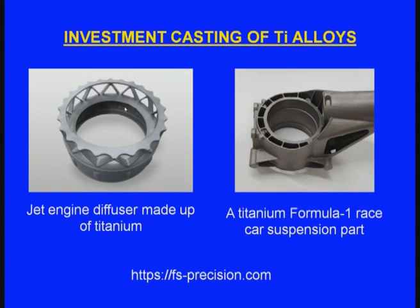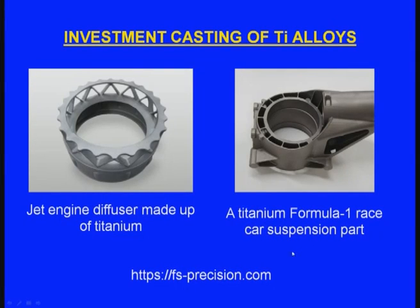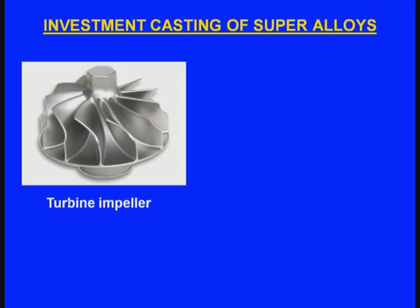Let us see the investment casting of titanium alloys. A jet engine diffuser made of titanium with complex features, thin sections and very good surface finish is produced by the investment casting process. A titanium Formula 1 race car suspension part, again with thin sections and complex sections, is also produced by investment casting. Finally, for super alloys, a turbine impeller with very thin and complex blades is manufactured by investment casting process.